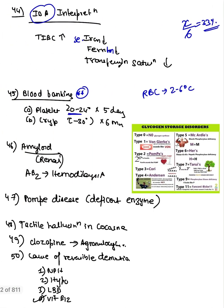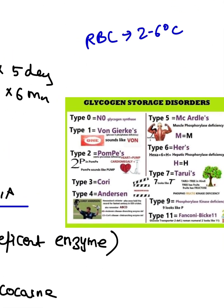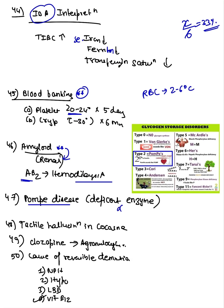Amyloid related to renal involvement: beta-2 amyloid in hemodialysis patients. Pompe disease — the deficient enzyme is alpha-glucosidase; it is type 2 glycogen storage disorder presenting with cardiomegaly. The mnemonic: Pompe = type 2.